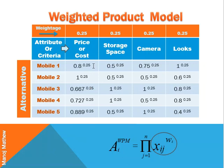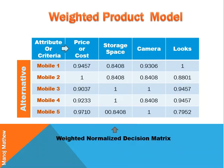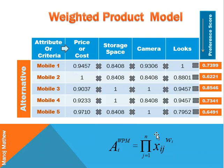On solving, we get the weighted normalized decision matrix. Here we take the product of each value in each cell and we get a preference score.